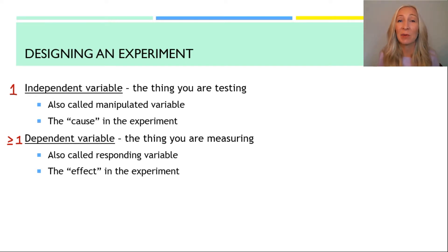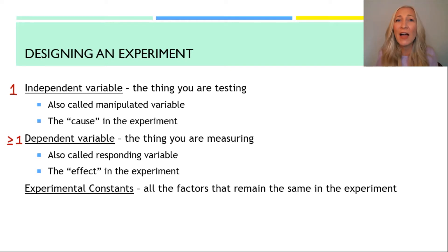The last thing that you need to keep in mind is your experimental constants. These are all the factors that remain the same during the experiment. Sometimes they're called the controlled variables, but I like to call them experimental constants because it helps me remember that they are staying the same. In many situations, these can be variables, but you as the experimenter are deciding to keep them the same to make sure your results are valid.